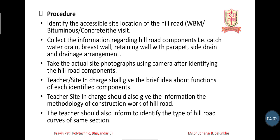The procedure for this experiment is: identify an accessible site location of hilly roads — it can be a WBM road, bitumen road, or concrete road. Collect information regarding hilly road components such as catch water drainage, breast wall, retaining wall, parapet, side drainage, and drainage arrangement. Take actual site photos using a camera after identifying the hilly road components. The site in-charge shall give a brief idea about the functions of the identified components, and also provide information about the methodology of construction work of the hilly roads.